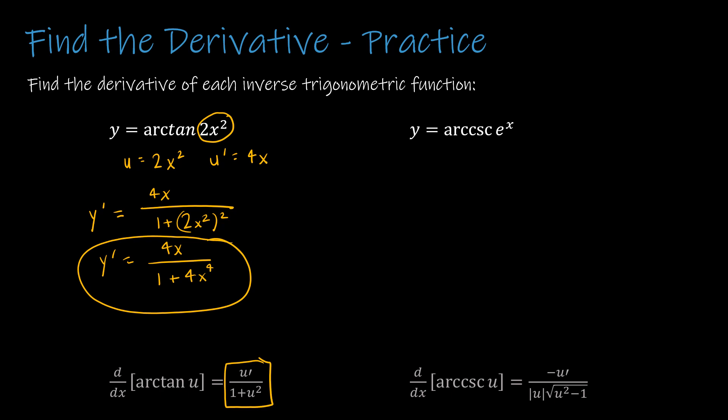For my second question, I have u is equal to e to the x, which means u prime is the derivative of e to the x, which, as we know, is e to the x. So now I have y prime is equal to, again, just using the pattern, negative u prime. So negative e to the x divided by the absolute value of u, which is e to the x, and then the square root of u squared, so e to the x, quantity squared, minus 1.